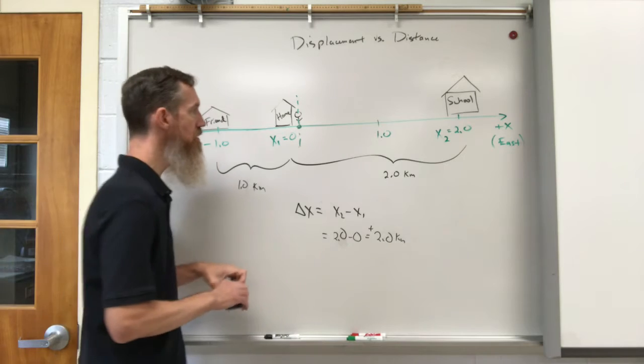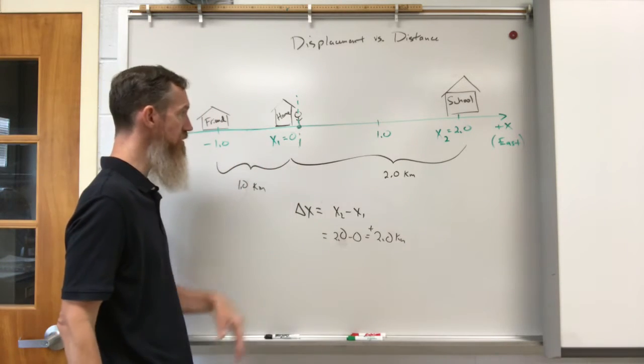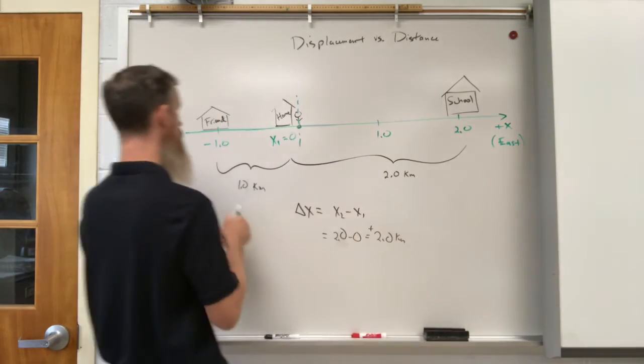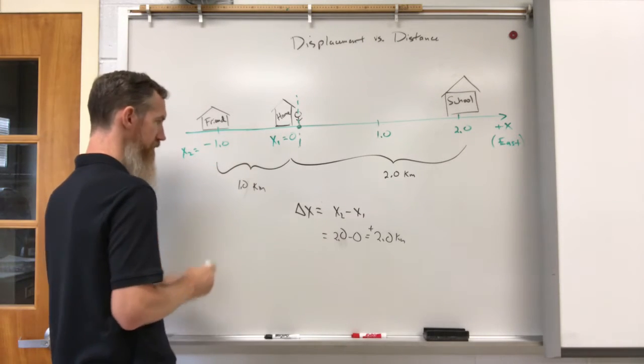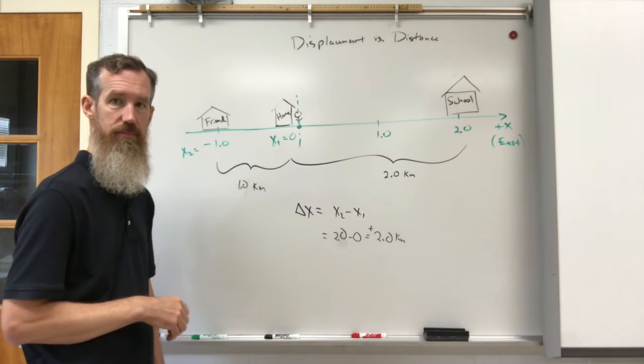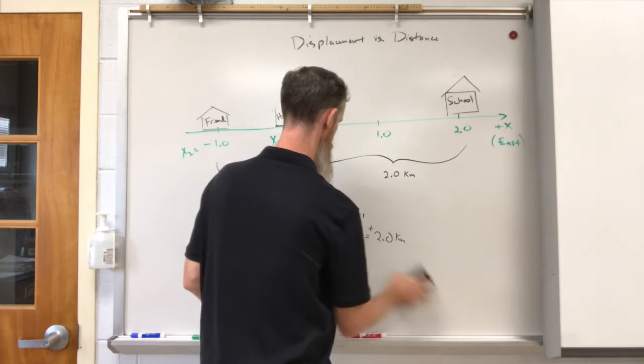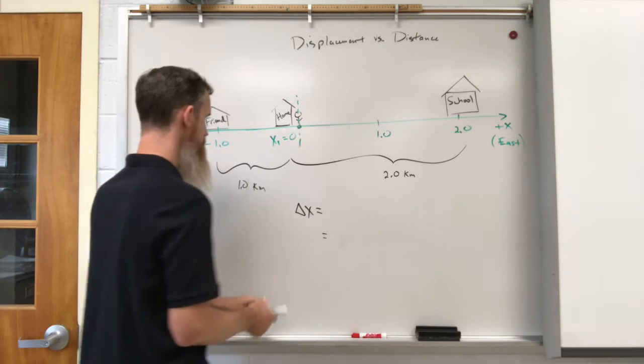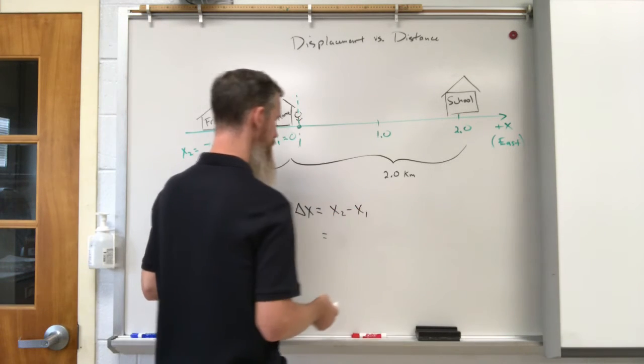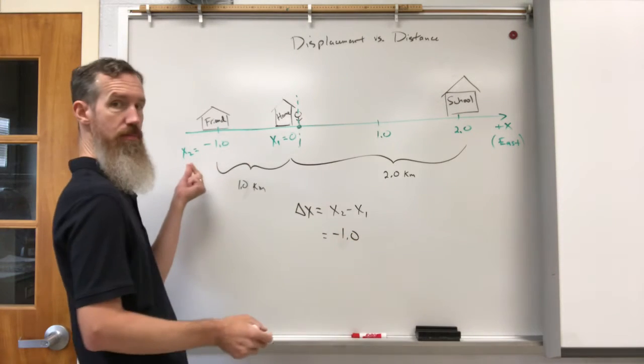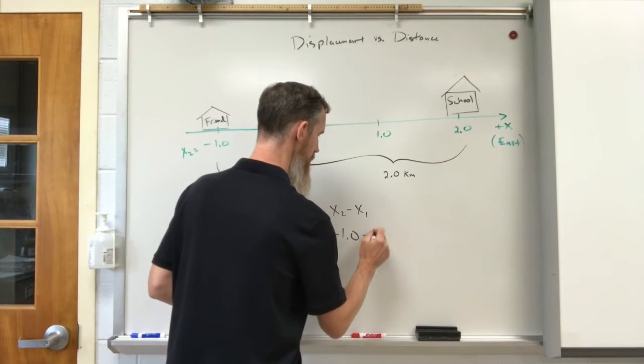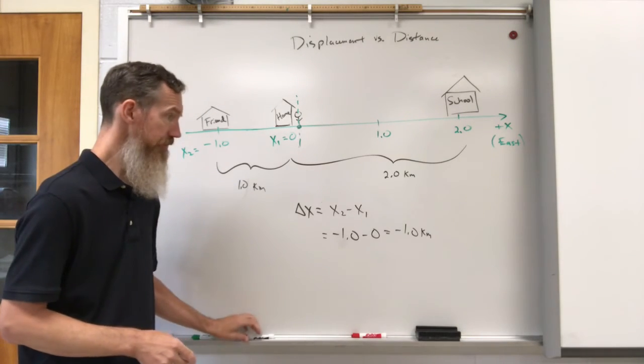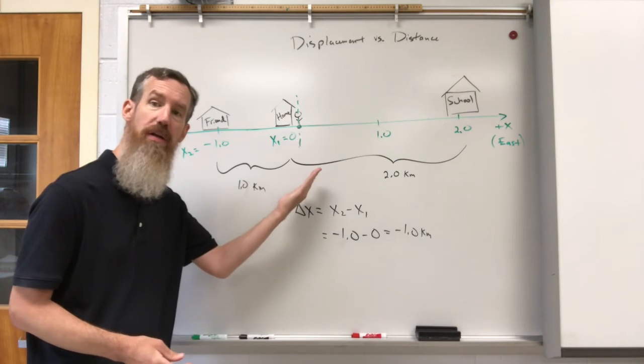So in that case we still start at home, x1 is zero, that's our initial position. And the way of defining this trip is I'm saying my final destination is my friend's house. And in this case we would go again x2 minus x1. x2 is the minus one position. Our displacement is negative one kilometers, or one kilometer to the west.